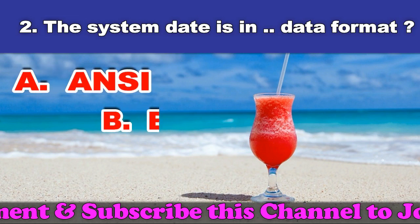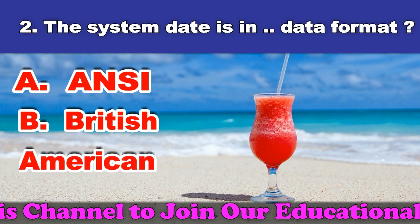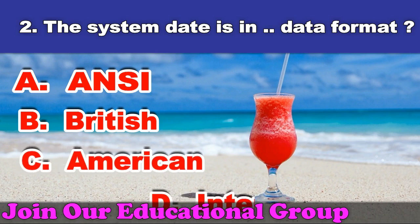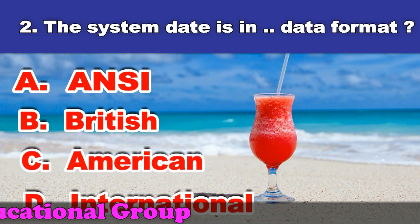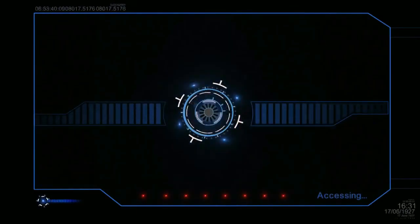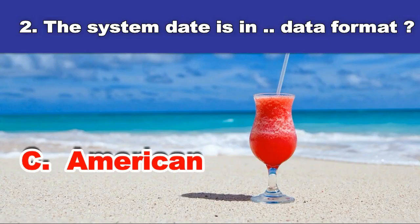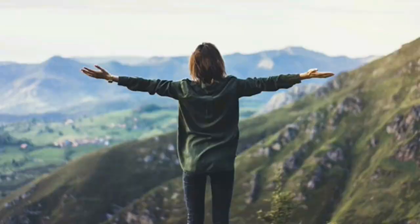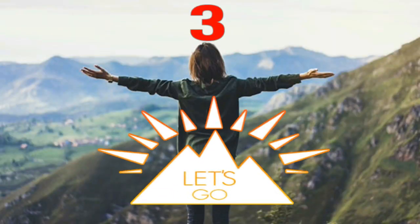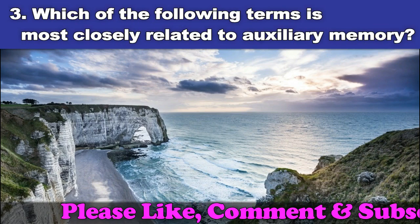Second question: The system date is in which data format? A. ANSI. B. British. C. American. D. International. And the answer is American.